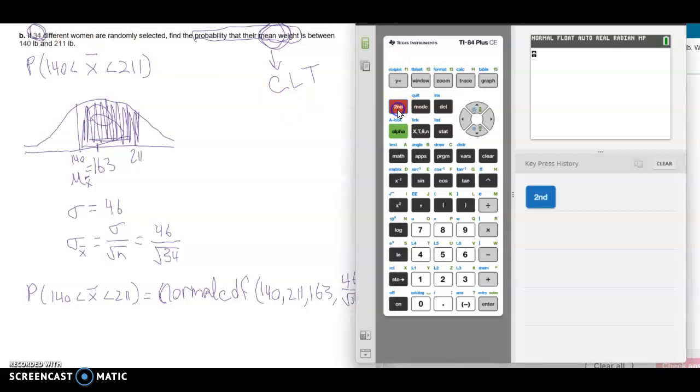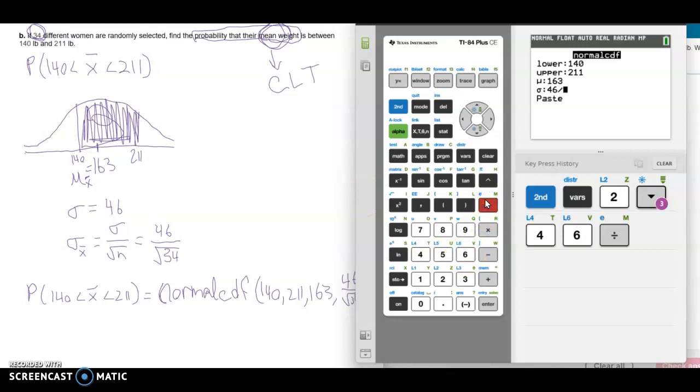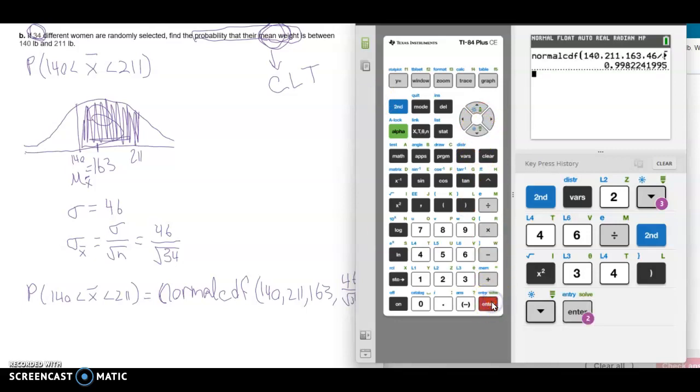So once again, we'll say second distribution. We'll go to normal CDF, I'm just going to press 2 this time. Our lower limit is 140, our upper limit is 211, our mean is 163. But now for our standard deviation, we're going to have 46 divided by square root, which is second and then x squared, of 34. Close your parentheses. And then press paste, enter again.